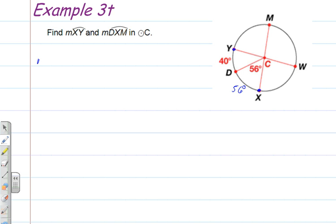So to find the measure of arc XY, we need to add the measure of arc XD and the measure of arc DY. That is 56 degrees plus 40 degrees. The measure of arc DY is 40 degrees.